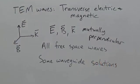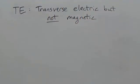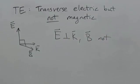but it's not the only thing that can happen in a waveguide. You can also have TE modes, for transverse electric, wherein the E field is perpendicular to the direction of propagation, but the B field is not.